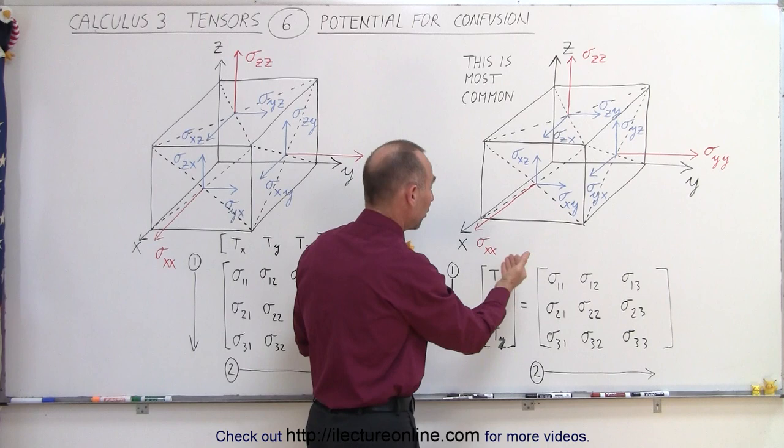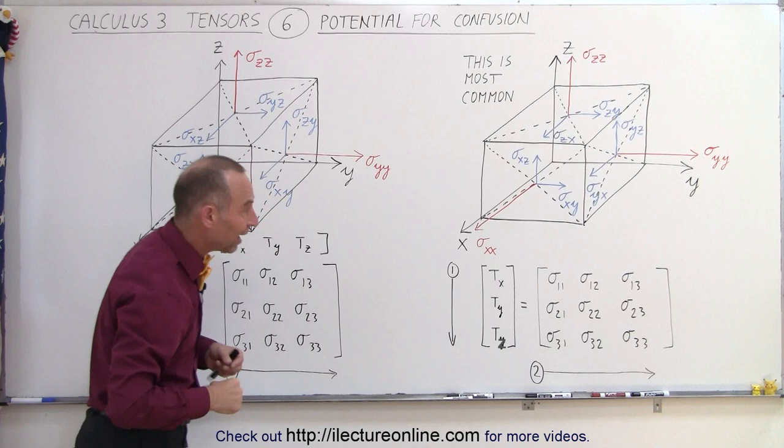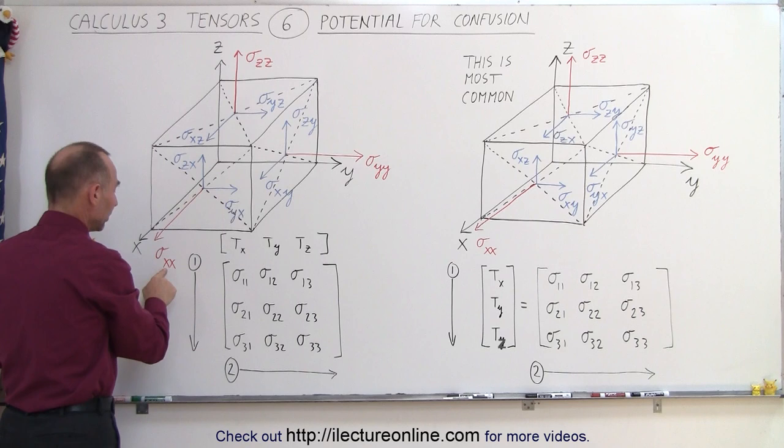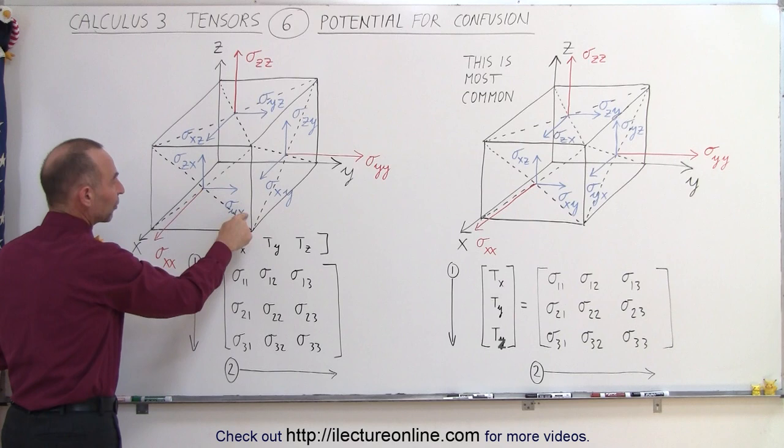But over on this side, things are a little bit different. Notice that here we have the direction in which it points first, and then the direction where we are on the cube. For example, we're pointing in the x, y, and z directions here, and we're on the x face of the cube.